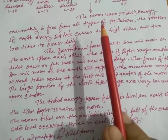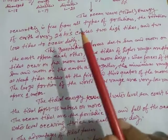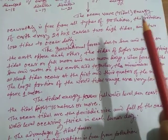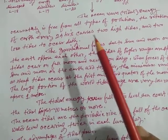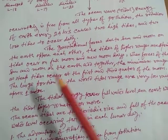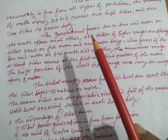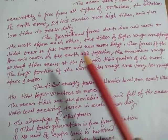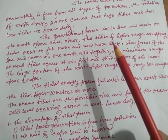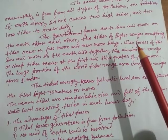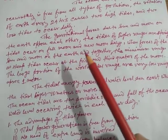The ocean wave tidal energy currently is free from all types of pollution. The rotation of Earth every 24 hours causes two high tides and two low tides to occur daily. The gravitational forces due to sun and moon on Earth oppose each other.